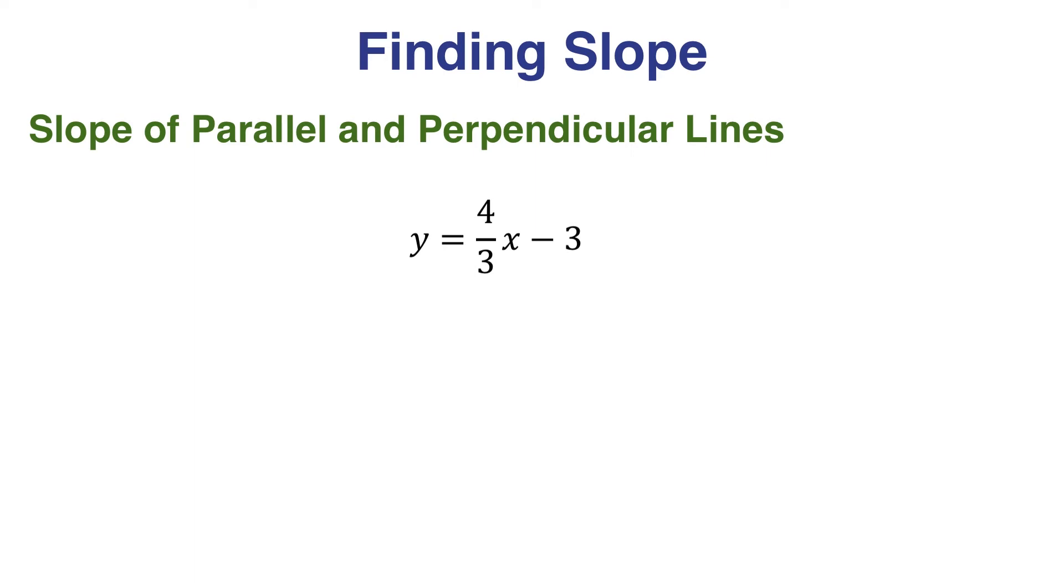So what's the slope of any line parallel to this line? The same thing, right? Because parallel lines have the same slope. So any parallel line will have slope of 4 thirds.